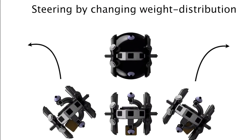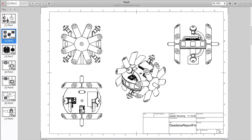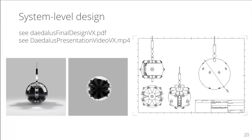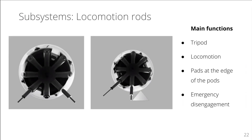The rods are still at TRL 1 — we know which requirements we have, but further research needs to be done into their realization. For better grip and stability, there will be pads on the tip of each rod. Because this brings the risk of getting stuck, there will be an emergency disengagement procedure where the corresponding rod is ejected, so the overall mission can still continue. Currently, we are looking into hydraulic and electric solutions for the rods.